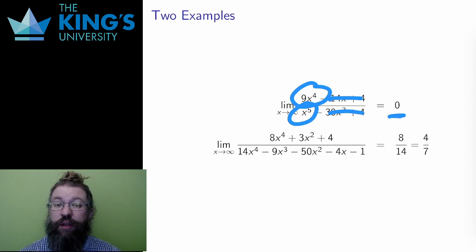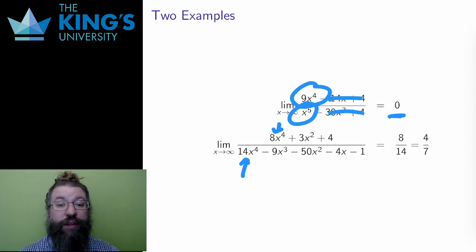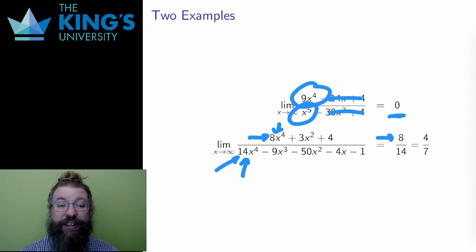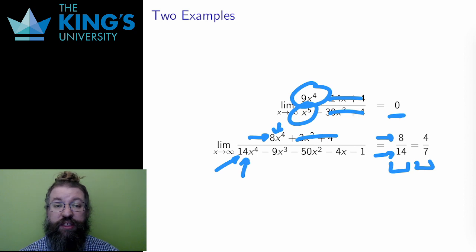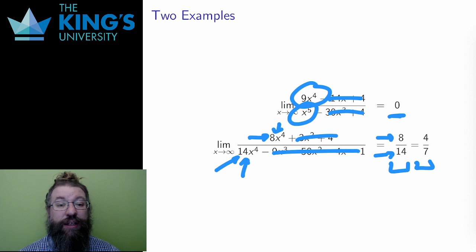In the second example, the degree is 4 in both the numerator and the denominator — the same asymptotic order — so I need the leading coefficients. In the numerator this is 8, and in the denominator this is 14. The limit is the ratio of these: 8 over 14, or 4 over 7. No other calculations are required; the other terms don't affect the limit whatsoever. Where it applies, asymptotic analysis is a very efficient way to determine limits, with relatively little calculation and little complication.